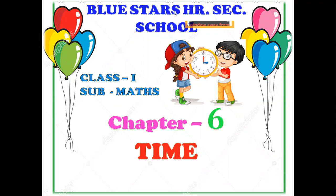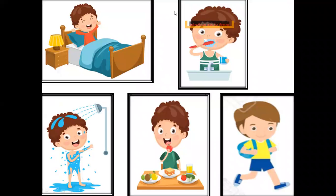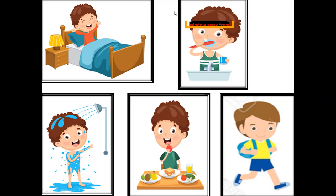Children, now see this activity — what the boy is doing. This is called Daily Routine. See first, the boy gets up from his bed. After that, he is brushing his teeth. Then he is taking a bath. After, he is having breakfast. And then, he is going to school.